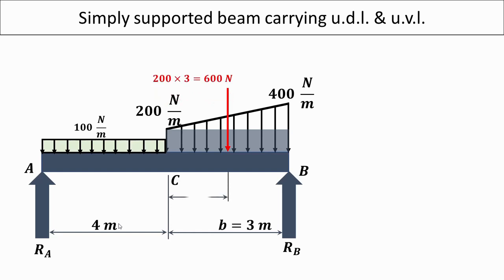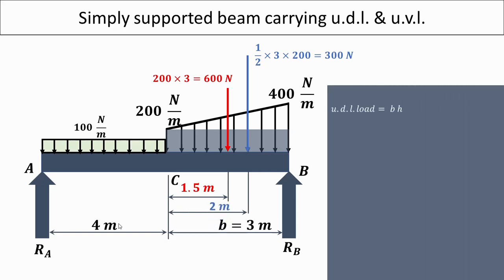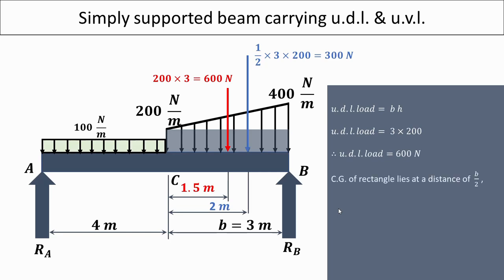Starting with the UDL of 200 Newton per meter: the total load equals B into H, where B is 3 meters, so 200 into 3 equals 600 Newton. The centroid of this rectangle lies at B over 2, which is 3 over 2 equals 1.5 meters. So 600 Newton acts at 1.5 meters — this is indicated by the red downward arrow.